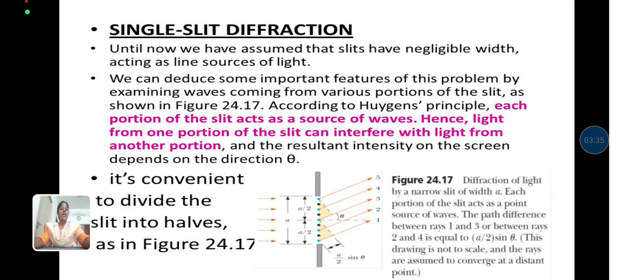It is convenient to divide the slit into two halves as shown in the figure for single slit diffraction. Each portion of the slit acts as a source of waves. Hence, the light from one portion of the slit can interfere with light from another portion, and the resultant intensity on the screen depends upon the direction theta.